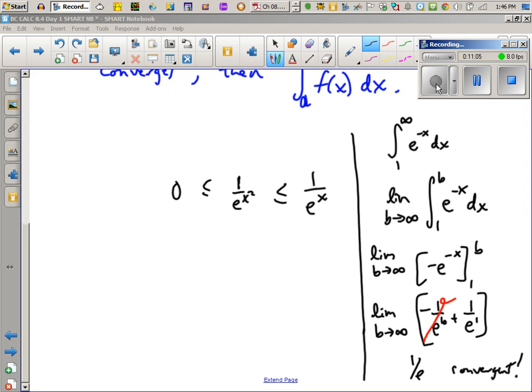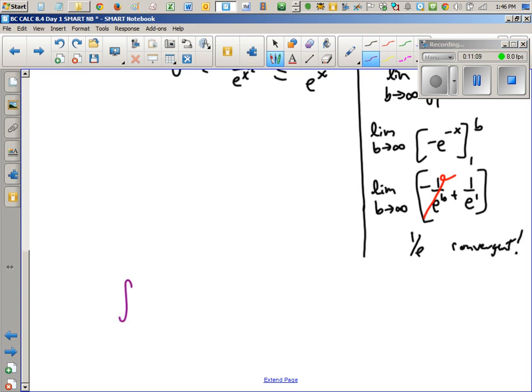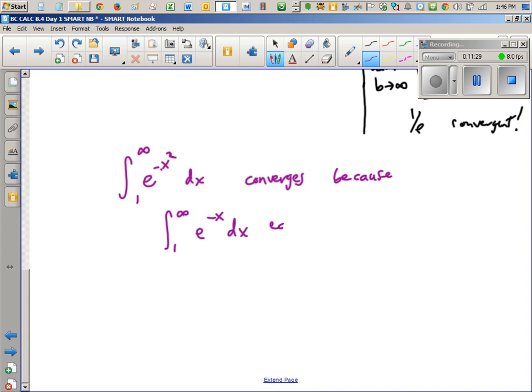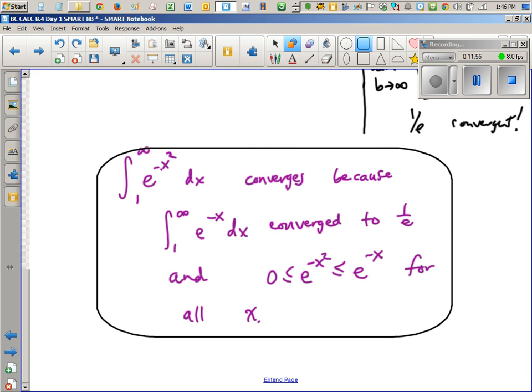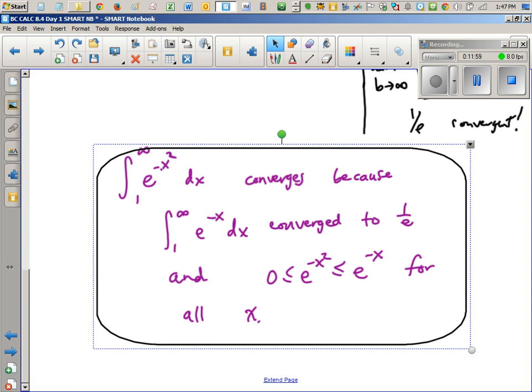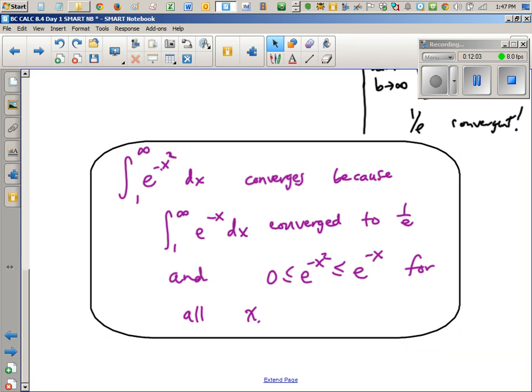Let's write a quick sentence to summarize what we just concluded. It would go something like this: Because the integral from 1 to infinity of e^(-x) dx converged to 1/e, and 0 ≤ e^(-x²) ≤ e^(-x) for all x, then the integral from 1 to infinity of e^(-x²) dx converges. If one integral converges and you're dealing with an integral that yields smaller y-coordinates all throughout its domain, then the one with the smaller y-coordinates should converge as well.